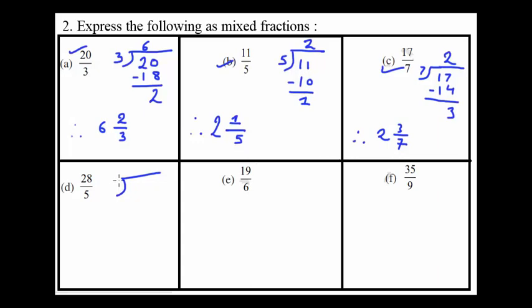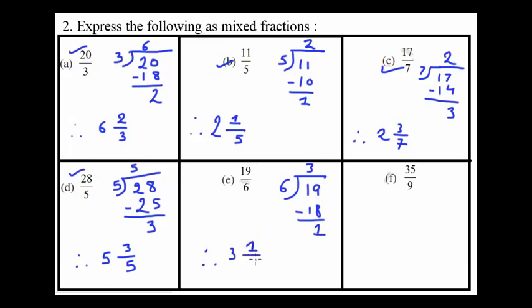Then comes twenty-eight by five. Five, five to twenty-five, and we have three remainder, therefore five and three over five. Second last, nineteen over six, six times three is eighteen, one would be the remainder, and we'll have three and one over six, that is three whole and one over six as a fraction. Thirty-five over nine, nine times three is twenty-seven, and eight would be the remainder, so we have three total parts and the fraction part that we have to add to the whole part to make thirty-five over nine is eight over nine. We are done with this question.